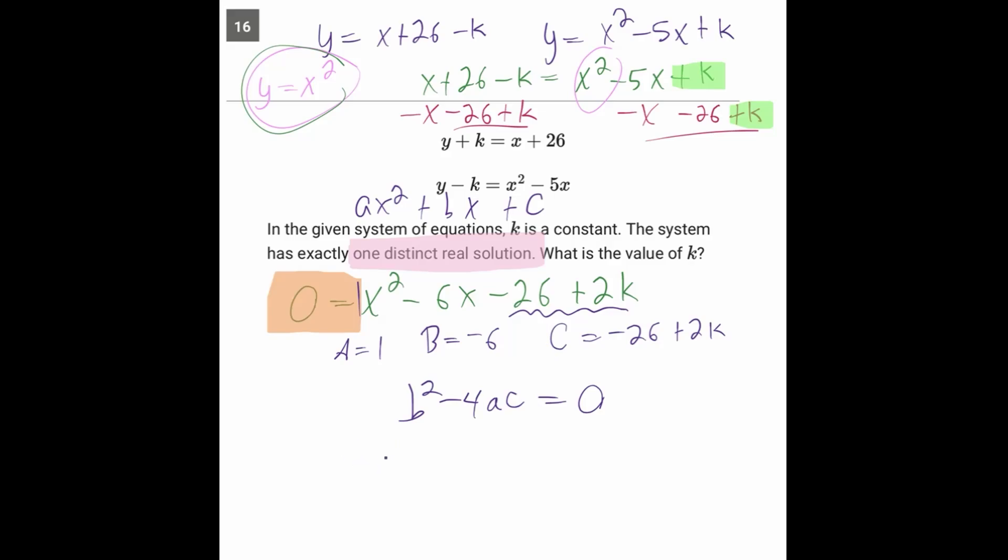So let's go ahead and start solving. B squared, negative six squared, minus four times one, which is not worth writing because when you multiply by one nothing happens, times C, which is negative 26 plus 2K, all equals zero. So negative six squared is 36. And we have negative four times negative 26, which is positive 104. And we're distributing. So we went here. Now we're distributing negative four times 2K. And that'll be negative 8K equals zero. Combine some like terms. 104 plus 36 is 140 minus 8K equals zero.